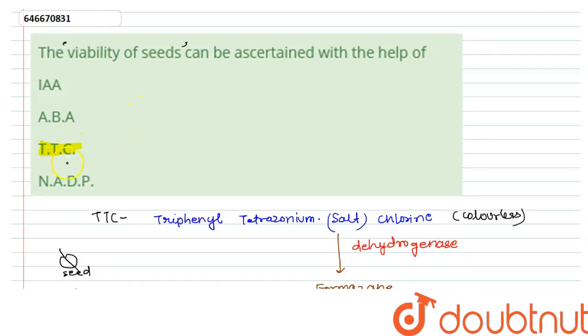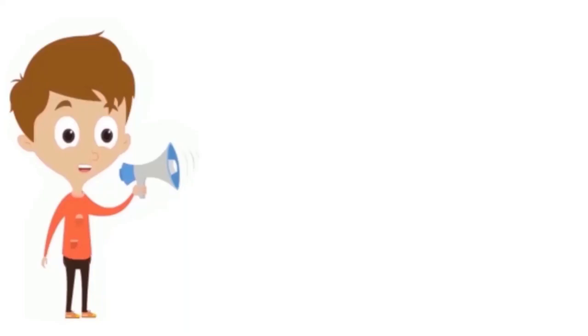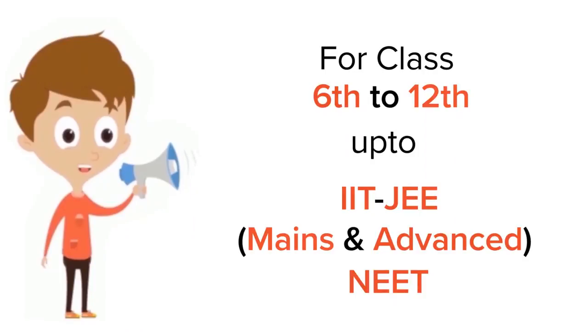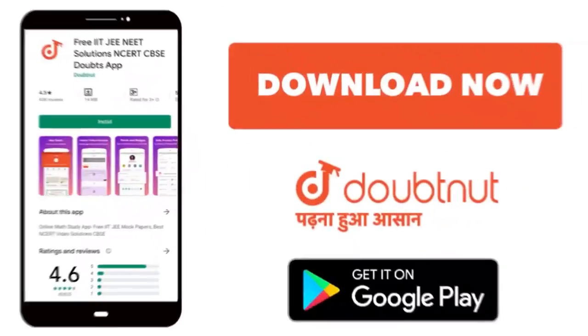So the answer to our question will be option 3, TTC. For class 6-12, IIT and NEET level, trusted by more than 5 crore students, download Doubtnet app today.